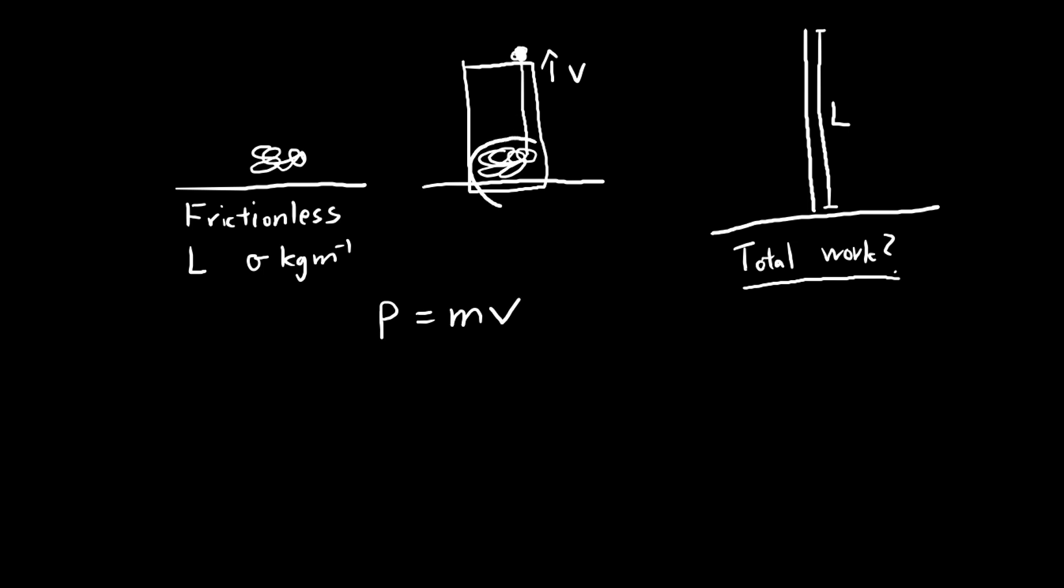This stationary part here contributes no momentum so the momentum comes from this moving part. What is the mass of the moving part? Well, let me just let this distance here be equal to x. The mass is equal to x times the density and v is just v because we're told that it's traveling at a constant velocity of v.